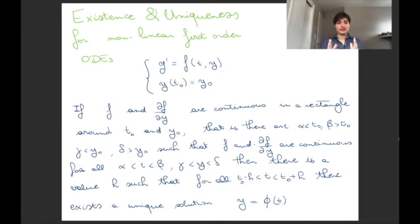are continuous in a rectangle around your initial condition, and now you have to think both in the t direction and in the y direction. So you want them both f and df/dy to be continuous for t between alpha and beta and for y between gamma and delta, where gamma is smaller than y0, delta is over y0, and alpha and beta are around t0 as well.